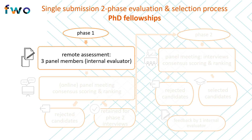For each application the chair designates three panel members who will serve as internal reviewers. Panel members are expected to be generalists and in this sense able to make a global assessment of all applications assigned to them. Using the pre-selection scoring grid, all internal reviewers will assess the different evaluation criteria and issue a numerical score in line with the descriptors in the scoring grid. At FWO we will average the different scores of the three internal reviewers as these will be the starting point for the next step, which is the pre-selection meeting.